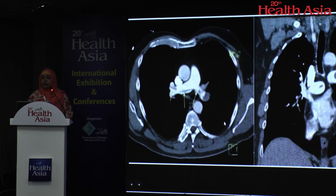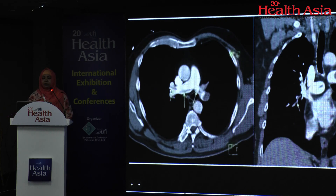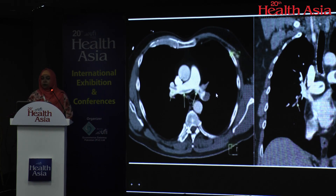Another example — this is a coronal view. You can see a large filling defect in the left main pulmonary artery and a saddle-shaped thrombus on the right side. This saddle-shaped thrombus needs to be critically and urgently communicated.